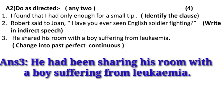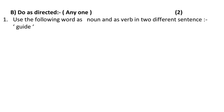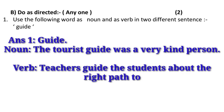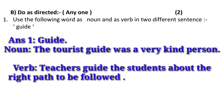We have completed question number 1 A2. Now let us solve question number 1B — 'do as directed' — attempt any one for two marks. The first one is: use the following word as a noun and as a verb in two different sentences. The word given is 'guide.' Guide as a noun: 'The tourist guide was a very kind person.' Guide as a verb: 'Teachers guide the students about the right path to be followed.'